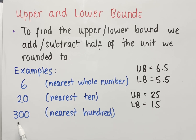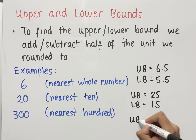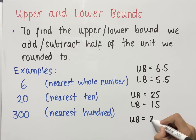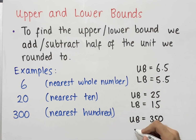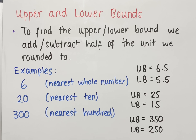Finally, for 300 rounded to the nearest 100: our unit is 100, and half of 100 is 50. We add and subtract 50 from 300 to obtain our upper and lower bounds. The upper bound is 300 + 50 = 350, and the lower bound is 300 − 50 = 250. The smallest possible number that rounds to 300 to the nearest 100 is 250, and all numbers between 250 and 350 round to 300 to the nearest 100.